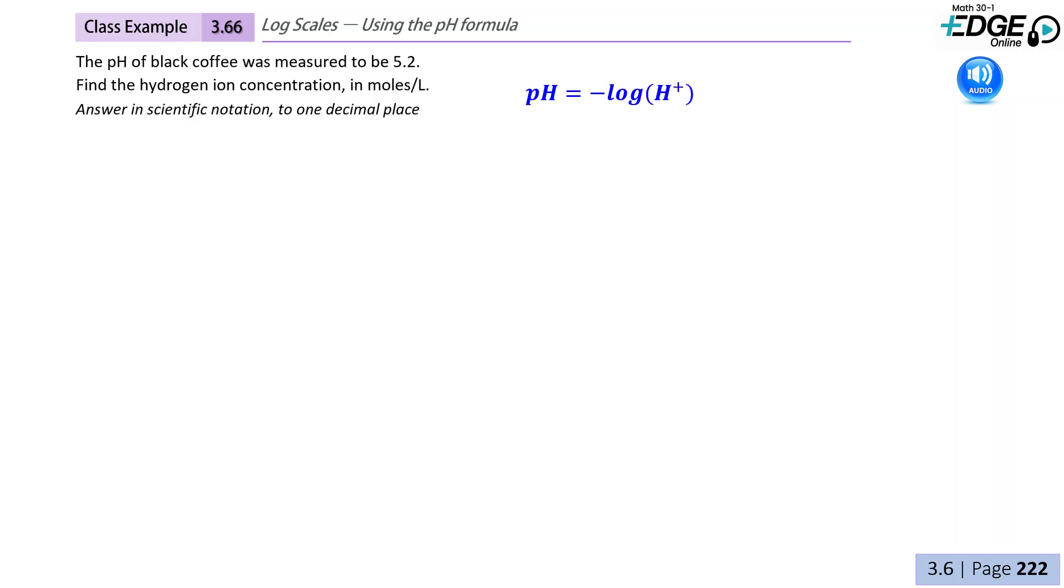Now we're just going to be solving for the hydrogen ion concentration. At this point, we will want to isolate the log term, so we really just need to remove that negative log.